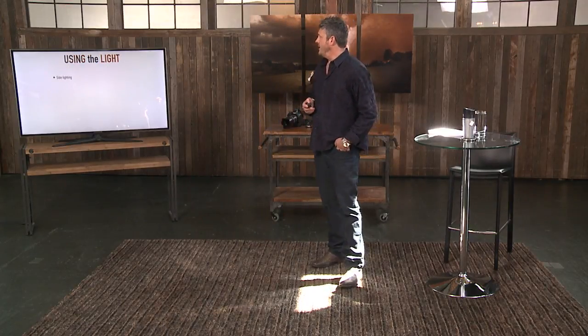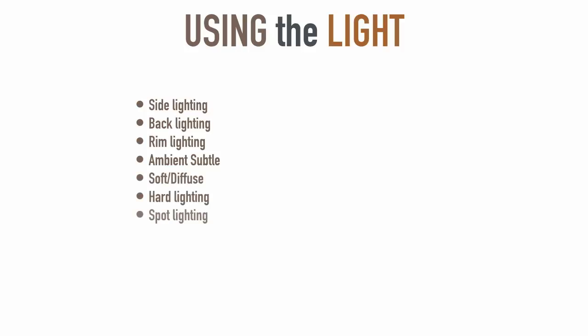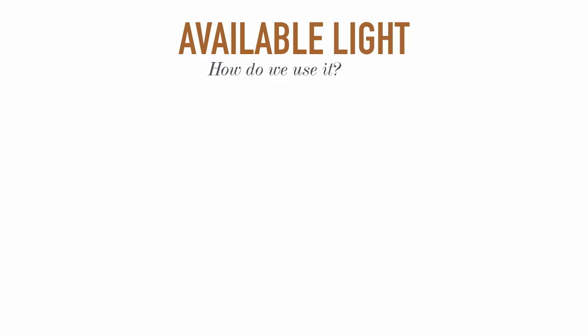Using the light: there's side lighting. There are so many ways to use a light — back lighting, rim lighting, ambient subtle, soft diffuse, hard lighting, spotlighting, and mixed. Combination advanced. Hopefully we get to combination advanced today. There's definitely a lot of different options in this room.